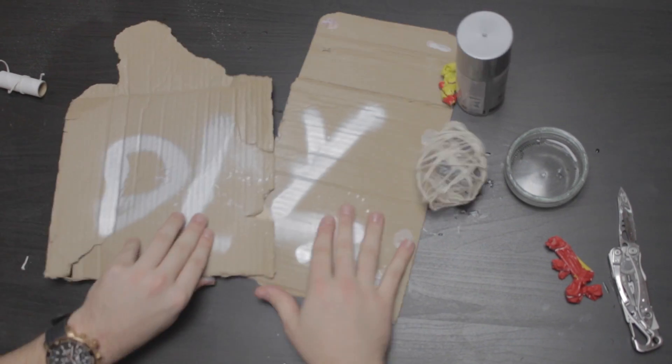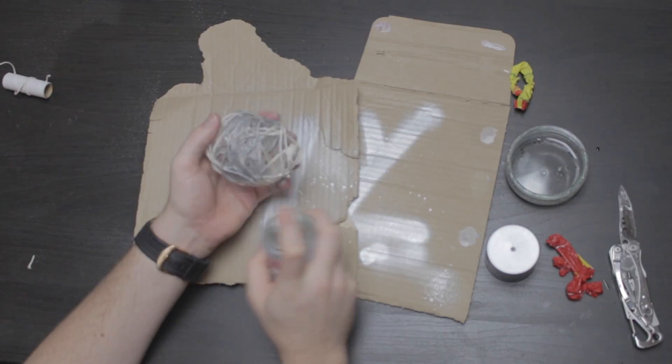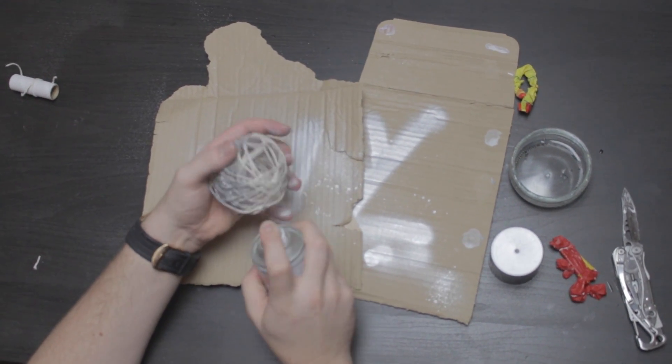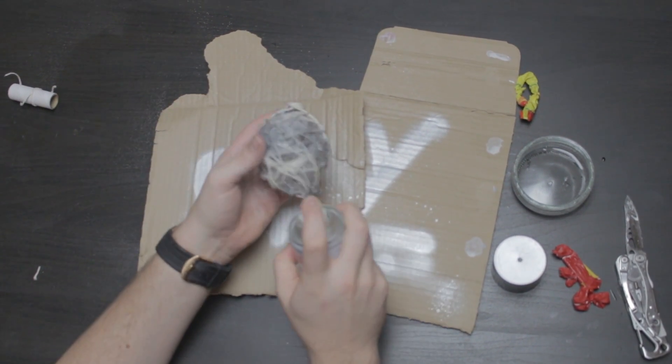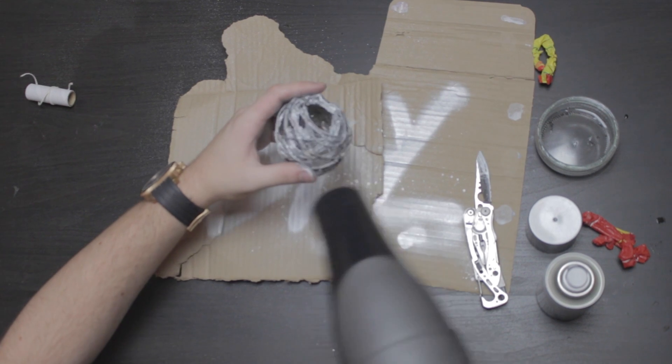Now for the fun bit. For this, I'm going to use a silver spray paint because in my family, all our decorations are silver, so it will blend in with everything quite nicely. Cover the entire thing with paint and then leave it to dry, or use a hair dryer like I did.